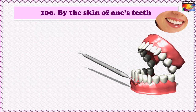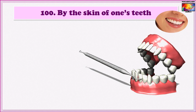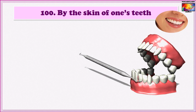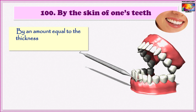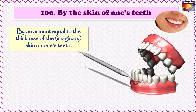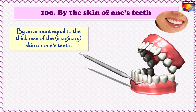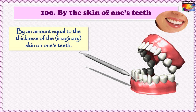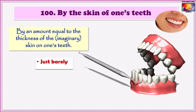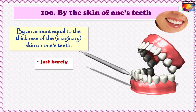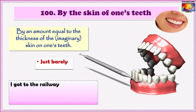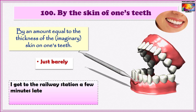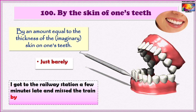Our last idiom in this lesson is 'By the skin of one's teeth.' We know that there is hardly any skin on our teeth — the skin of the teeth probably refers to the primary animal layer on our teeth which is very thin. So, the phrase means by a very small amount or just barely. For example: 'I got to the railway station a few minutes late and missed the train by the skin of my teeth.'